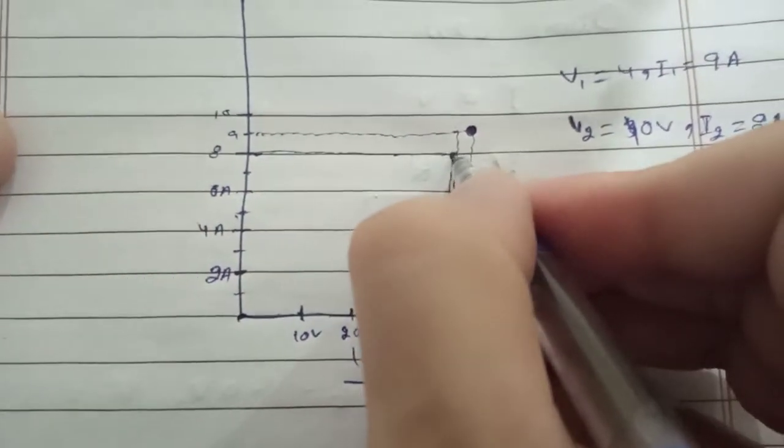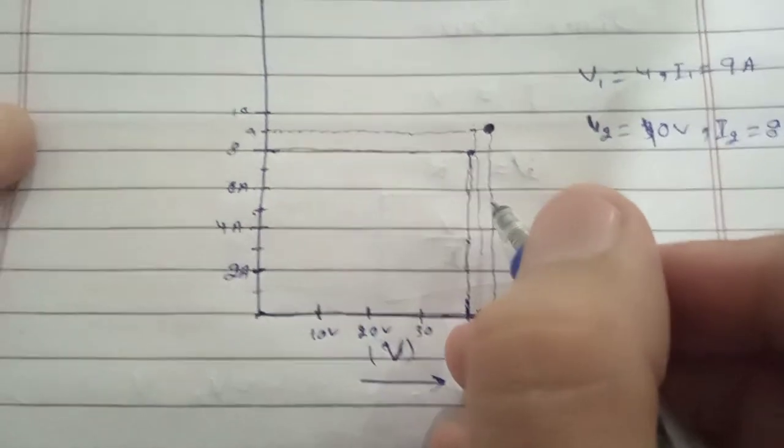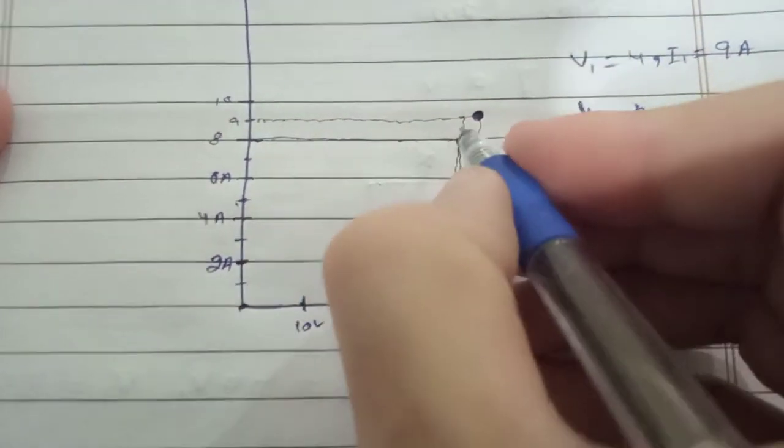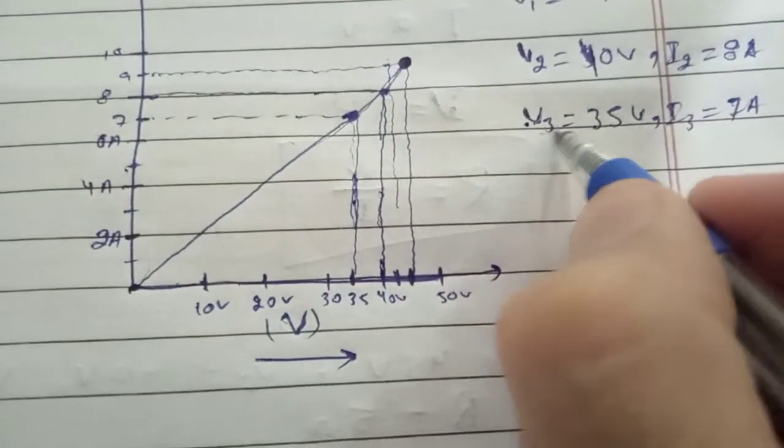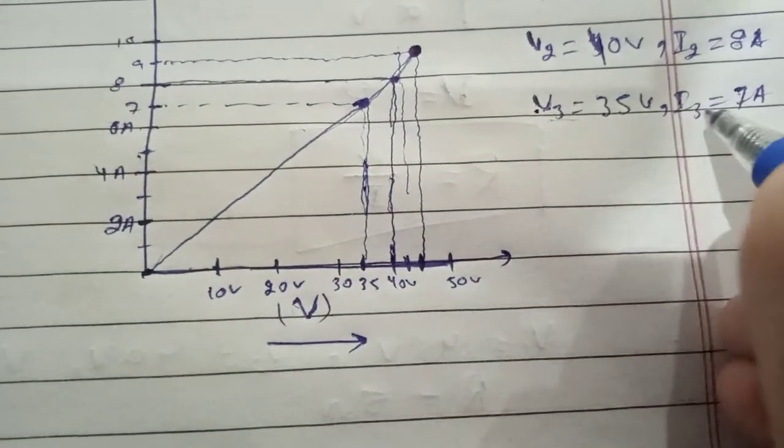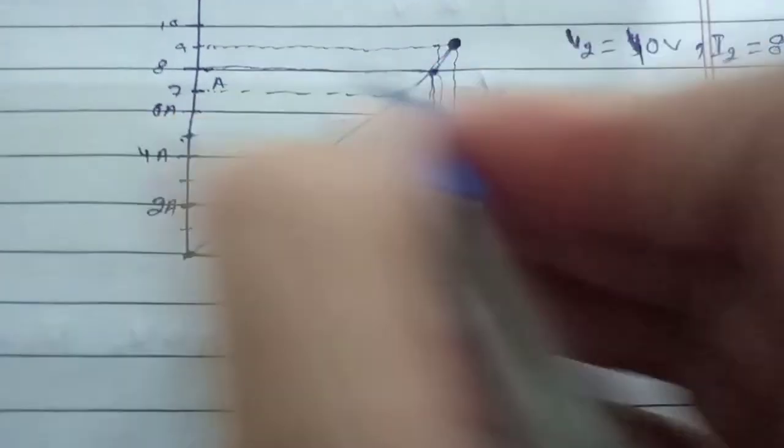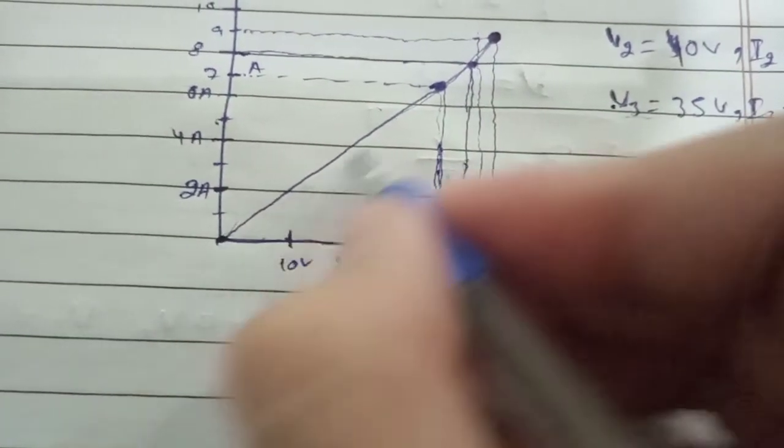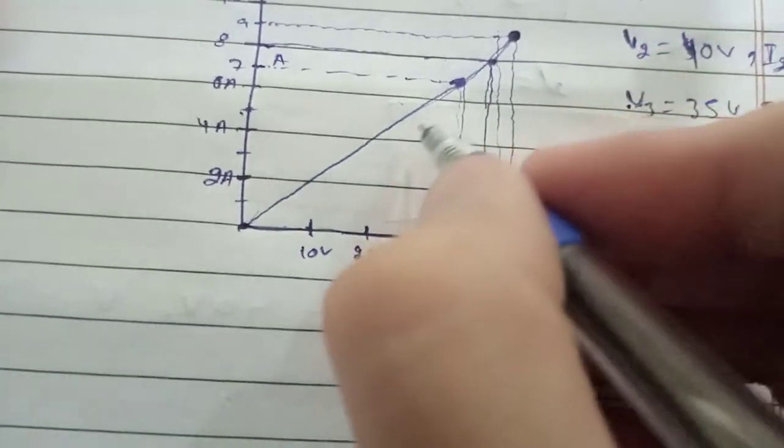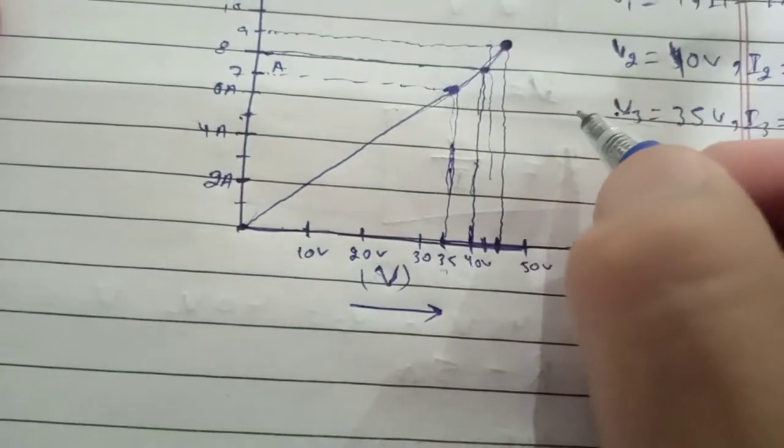Now let me draw this quickly. Here is our corresponding voltage value for V3, which is 35 volt, and current is 7 ampere. This is at 7 amps. Since our voltage value was 35 volt, when we plot the graph between these two, we will get a linear relationship between the voltage and current.